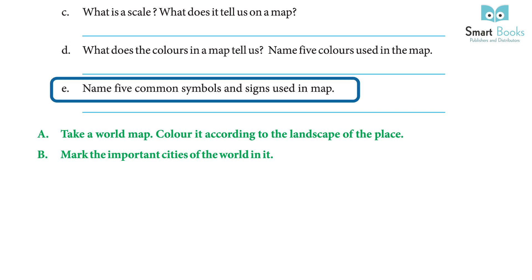Question: Name five common symbols and signs used in a map. Answer: Cities are shown by a circle; double circles show a city that is also a capital; dotted lines or dashes show the boundary of land; railways and other features are marked using symbols; a key explains what each symbol represents.